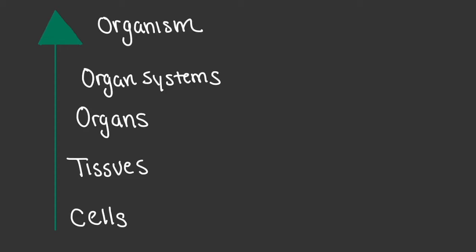As we investigate the topic of histology, we need to look back through our hierarchy and determine which of these words best identifies the study of histology. If you're thinking that the word tissues is correct, then you are correct. Histology is the study of our body tissues, and we have four unique types of tissues within the human body.